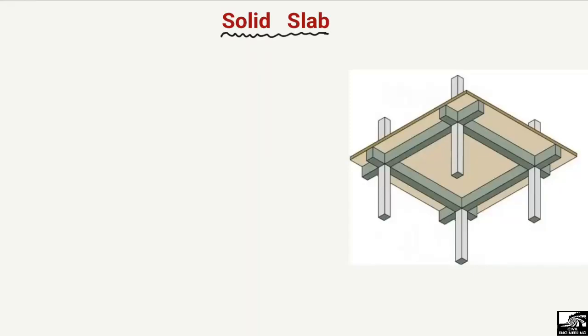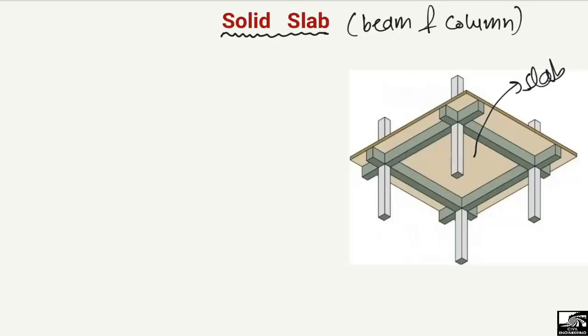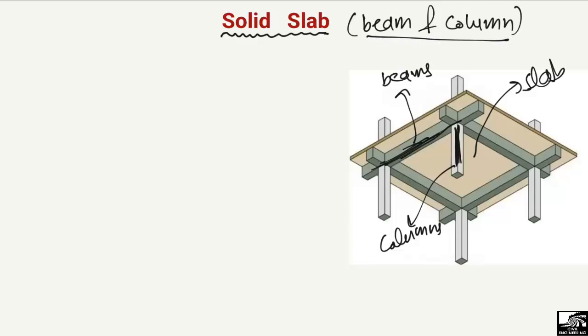Starting from the solid slab: a solid slab is a type of slab which is supported by beams and columns. If we look at this figure, we can see the slab system here. The slab is being supported by beams — the horizontal members — and these beams transfer the load to the columns, which are the vertical members. Such a type of slab supported by the beam and column combination is known as the solid slab, and it is the most widely used type.